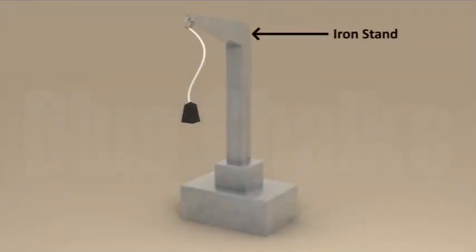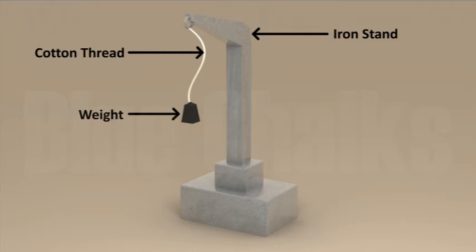Take an iron stand for the clamp. Take a cotton thread. Tie it to the clamp so that it hangs freely from it. At the free end, suspend a pan so that weights can be placed in it.